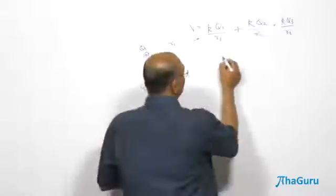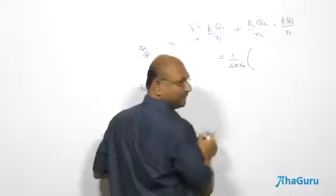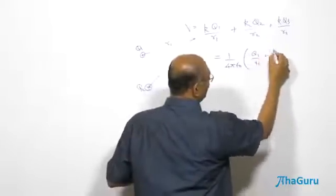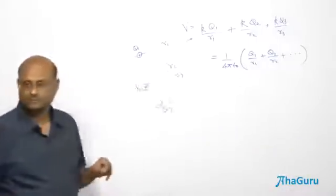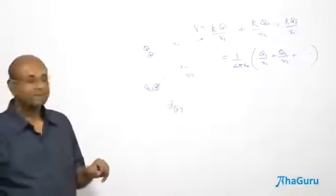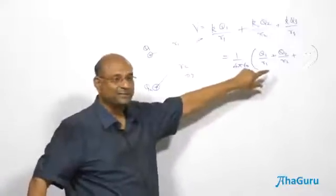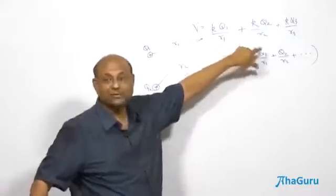In fact, you can write this as 1 by 4 pi epsilon naught. Take the K out, which is 1 by 4 pi epsilon naught. Q1 by R1 plus Q2 by R2 plus Q3 by R3, etc. So, for every charge. And by the way, this becomes very nice and simple when you need to convert it into an integral. Because that will just become DQ by R.